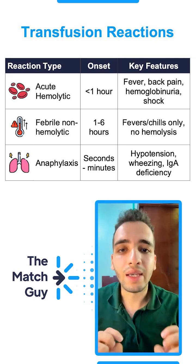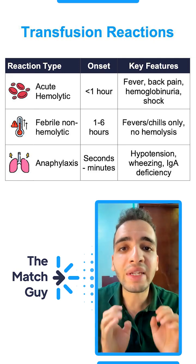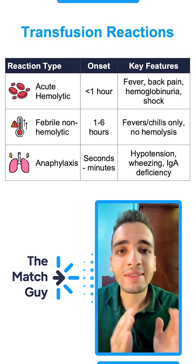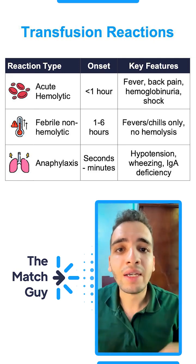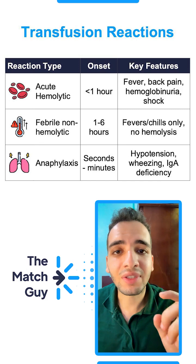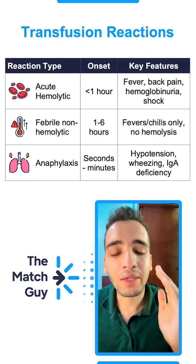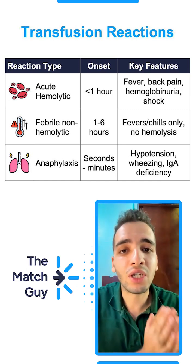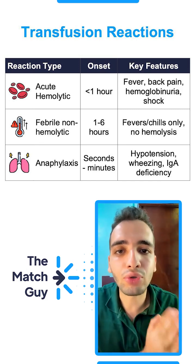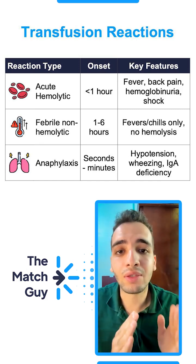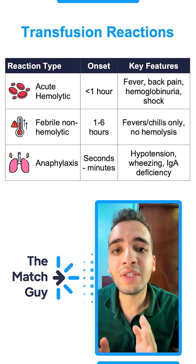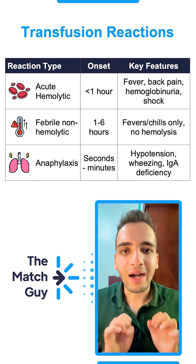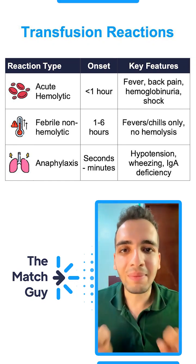Lastly, if you see pulmonary infiltrates in less than six hours, this is transfusion-related acute lung injury (TRALI). You need to differentiate it from circulatory overload, which will have jugular venous distension and hypertension. I am Kareem from The Match Guy.